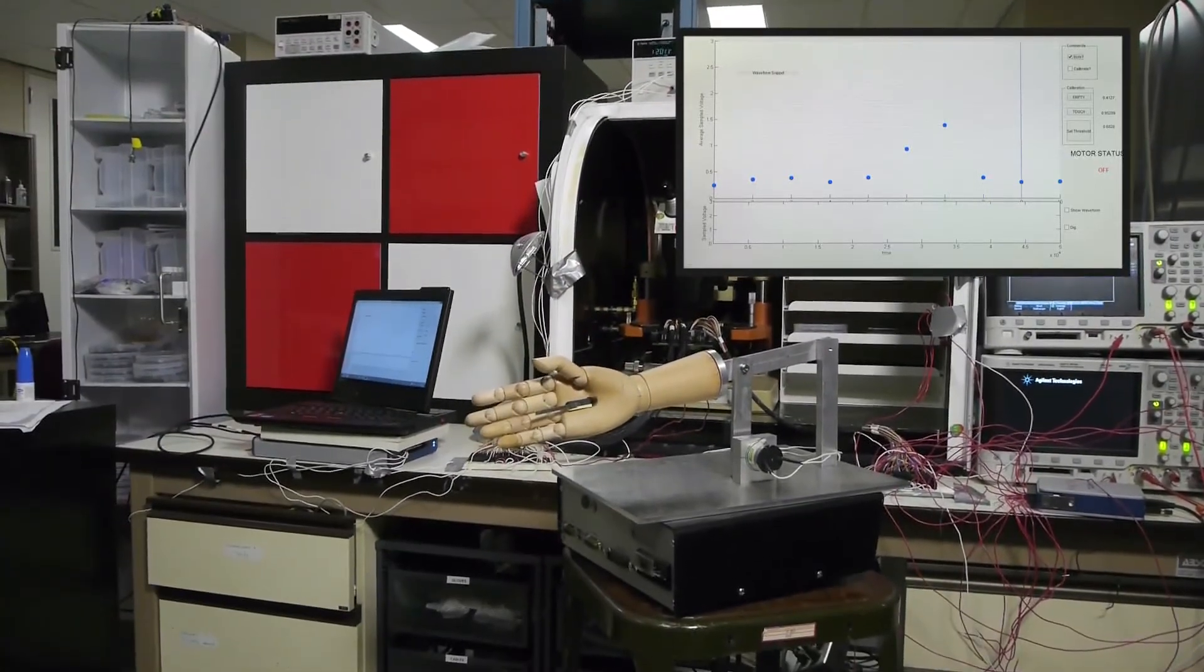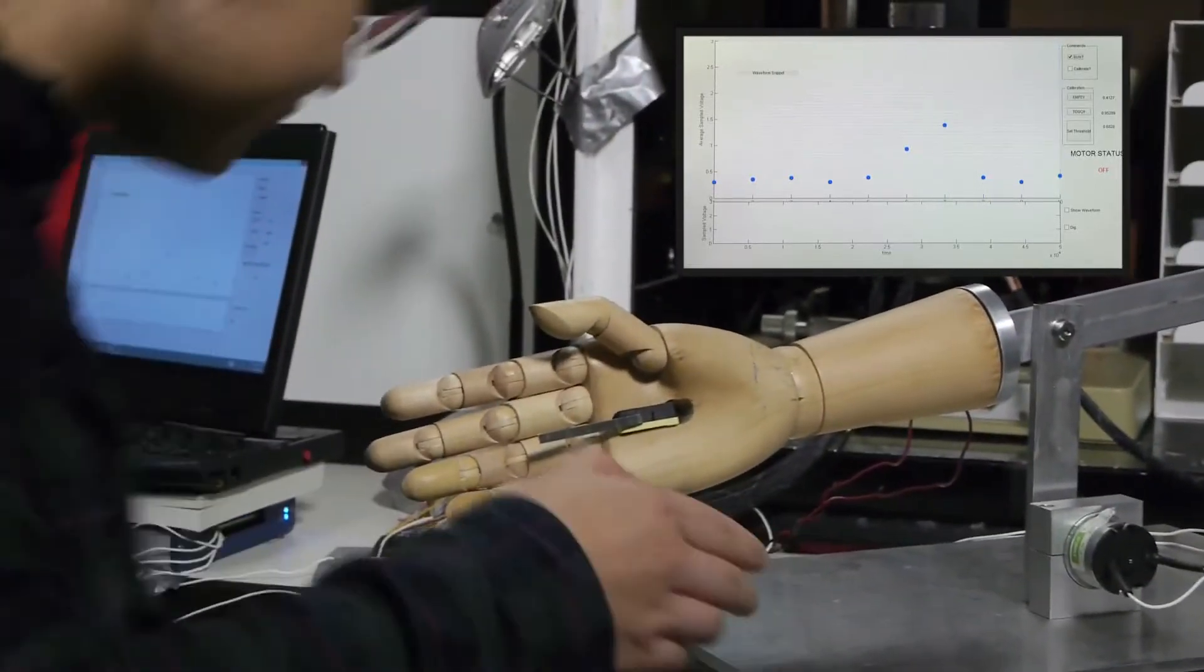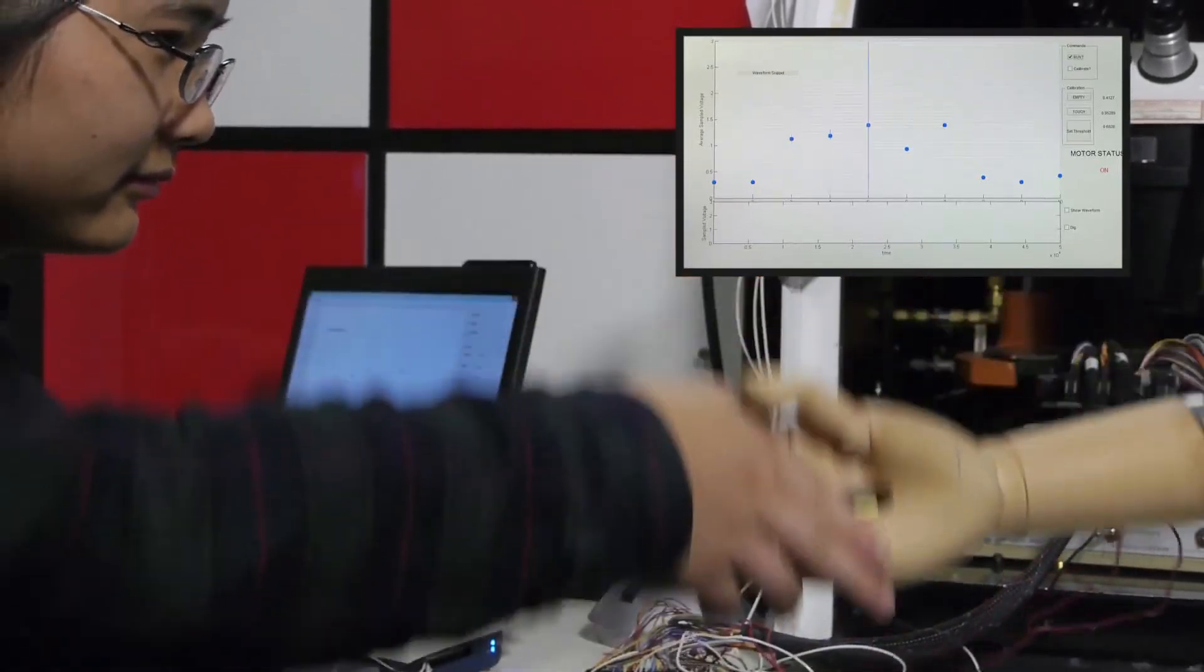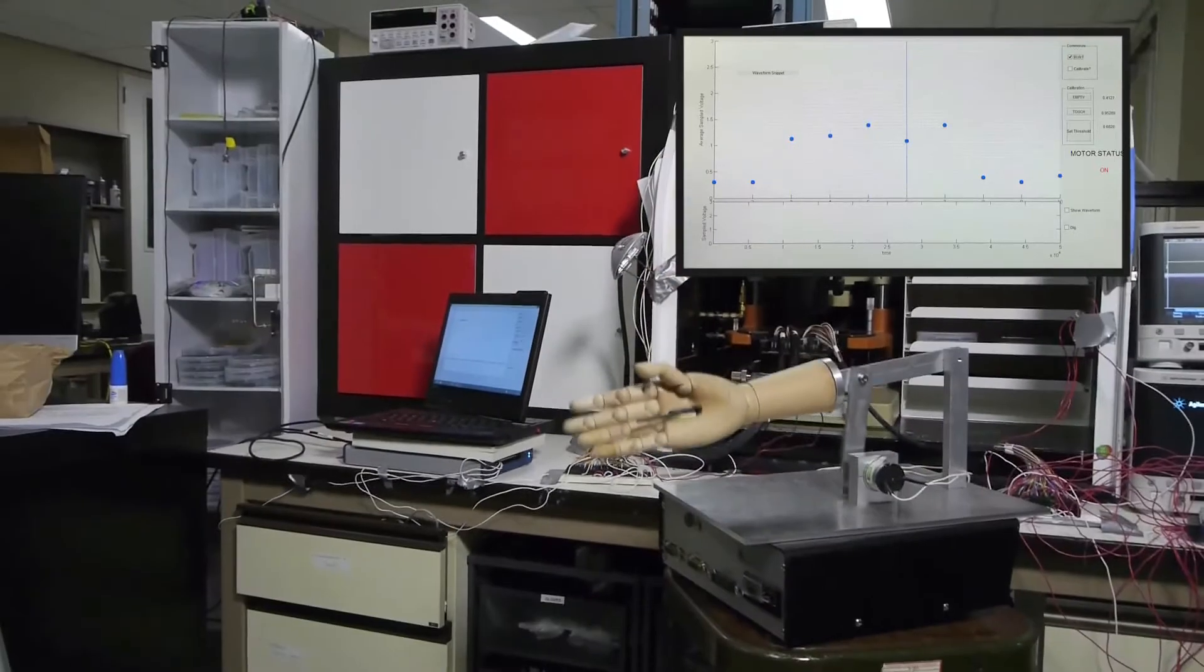With no hand on the switch, the average output is low and Sasha doesn't move. But when we grab hands with Sasha, the average output jumps up and Sasha shakes our hand.